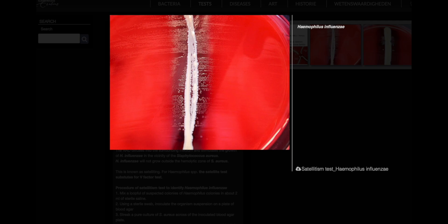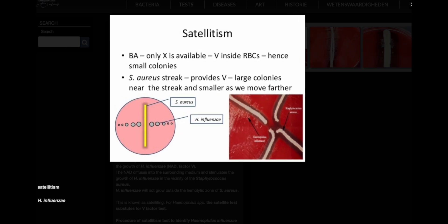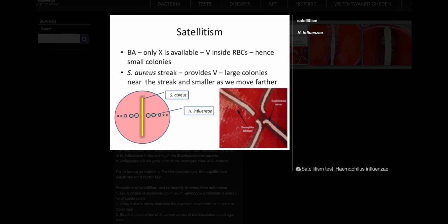Why Haemophilus Needs X and V Factors: Haemophilus influenzae utilizes Factor X to synthesize crucial respiratory enzymes such as cytochromes, catalases, and peroxidase. Factor V (NAD) serves as an electron carrier in the organism's oxidation-reduction processes, facilitating energy production.